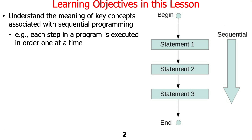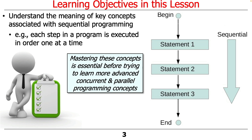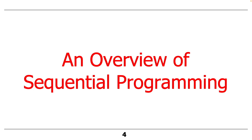Basically, at a high level, sequential programming means each step in a program is executed in order, one at a time. That's the meaning of sequential. It's very important to master these concepts before trying to learn more advanced concurrent and parallel programming concepts. If you can't write sequential programs correctly, it's going to be hard to write parallel and concurrent programs correctly. So it's important to understand what's going on there.